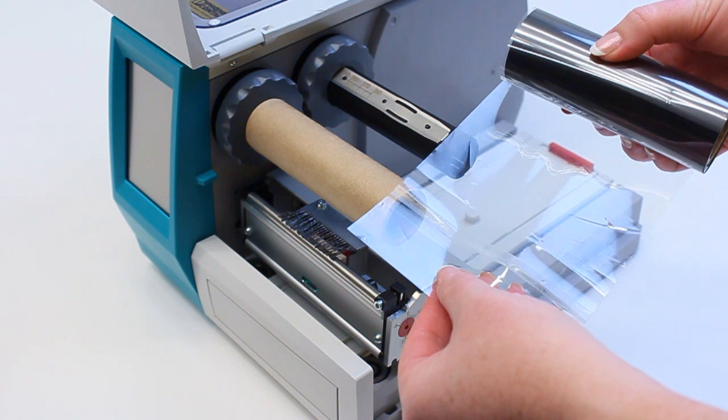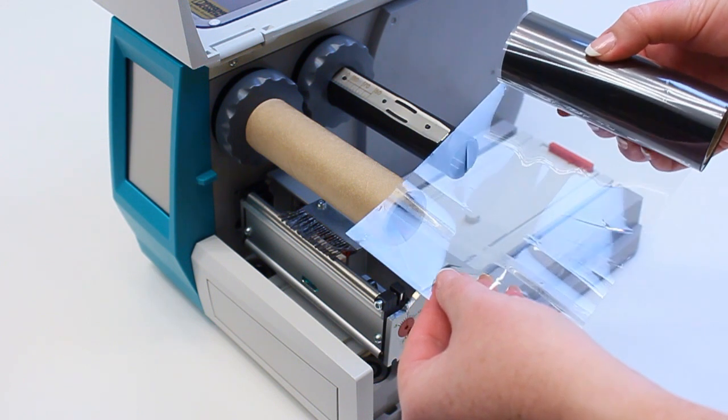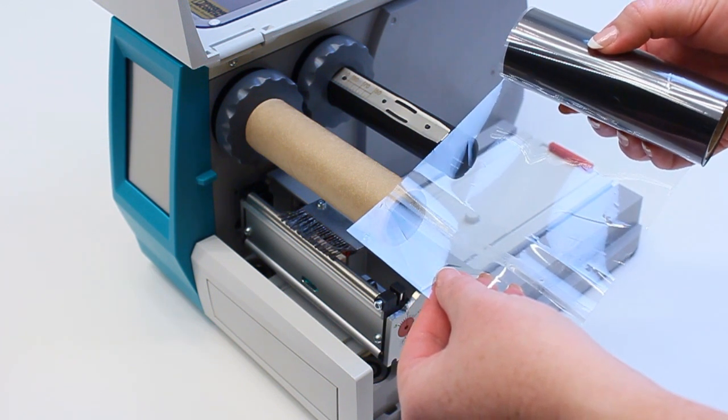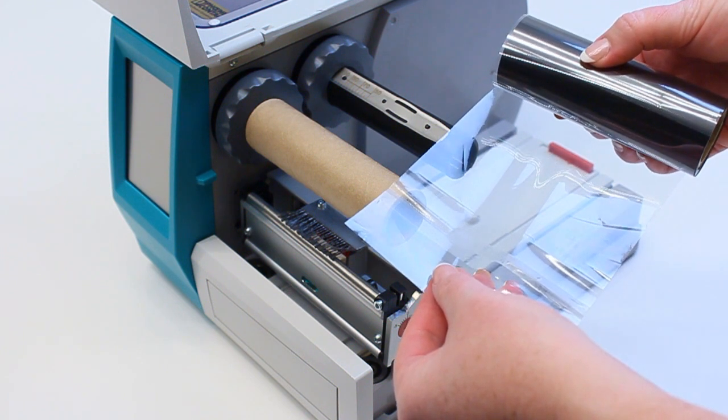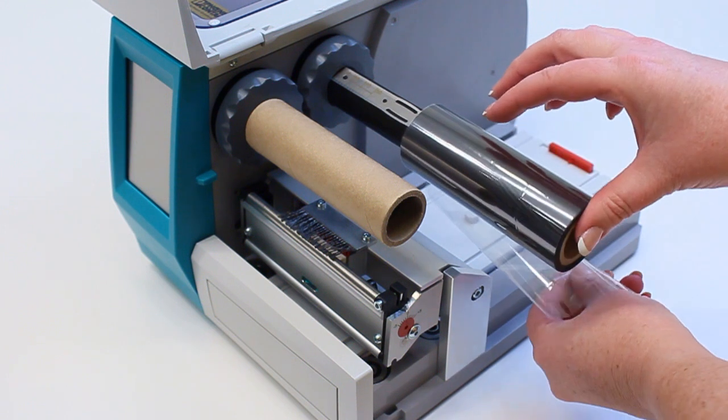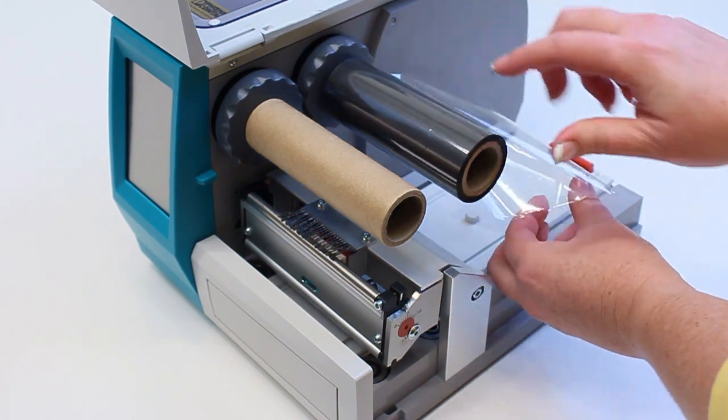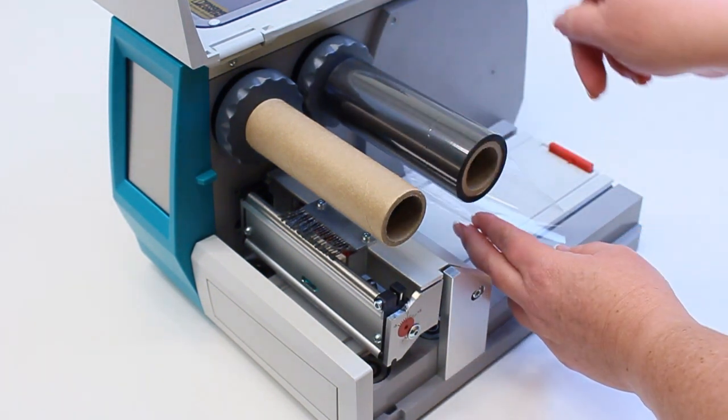A new ink ribbon will begin with a length of clear plastic with an adhesive strip. If you are using a partial ribbon, a piece of tape can be used to secure the loose end. Place the ink ribbon on the back spindle with the ribbon rotating in a clockwise direction, towards the back of the printer.